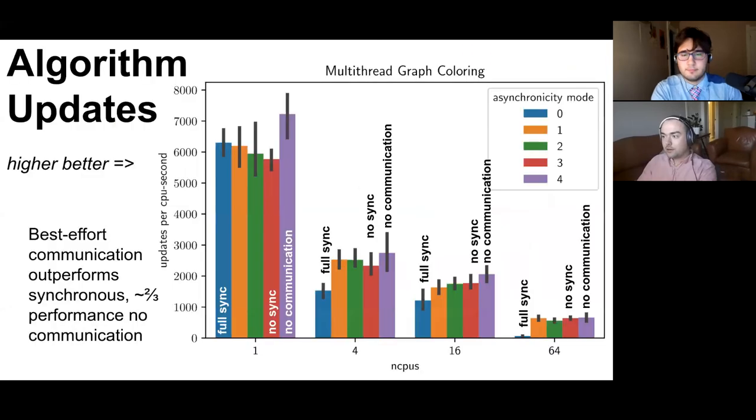All right moving on to the multi-threading context we see similar results. However the relationship doesn't become apparent until we scale up to 64 threads at which we see a significantly better algorithm update calculating speed of the best effort model compared to the fully synchronous model. And you can see that a lot of the overhead that's causing a slowdown here is not necessarily due to synchronization or communication but due to other factors, since our control with no communication between threads also slows down.